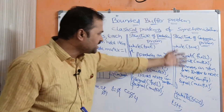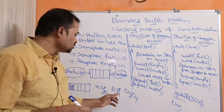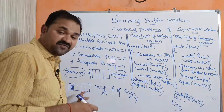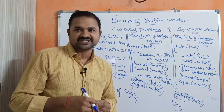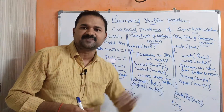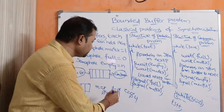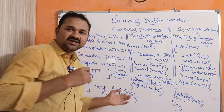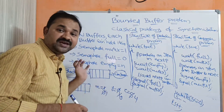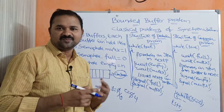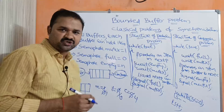Assume the producer process completes its operation in the critical section and executes the exit section: signal(full). The full value is incremented by 1 — previously 0, now full becomes 1 — because one buffer is now full out of 5 buffers. Then signal(mutex): mutex was 0, now mutex becomes 1, meaning the critical section is free. Now the consumer process tries to enter: wait(full) — full is now 1, and 1 <= 0 is false, so control comes out and full becomes 0.